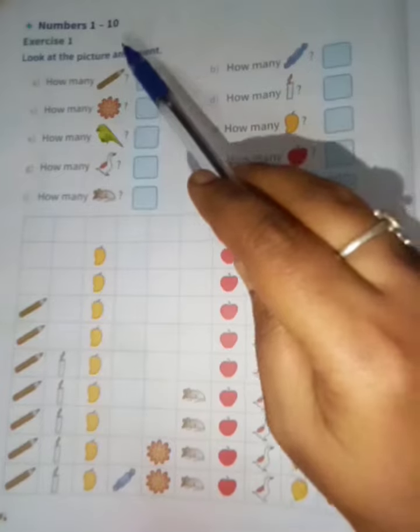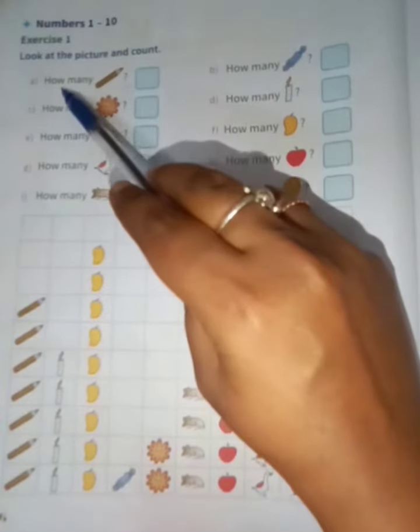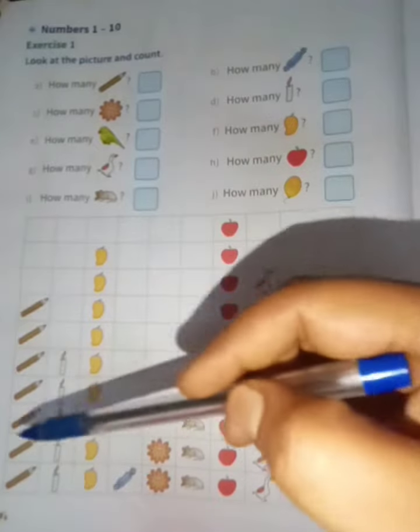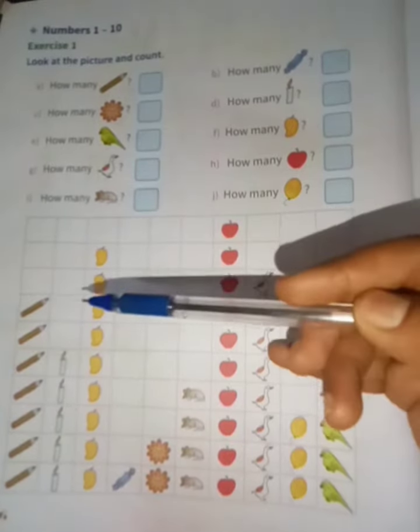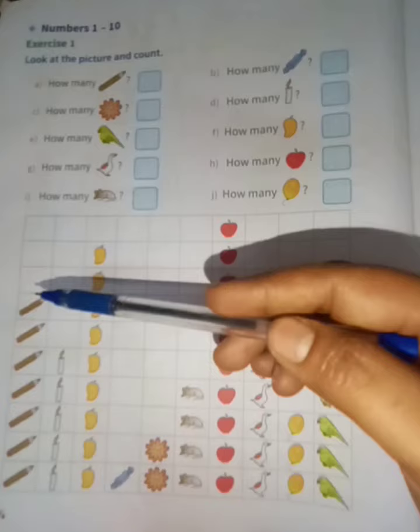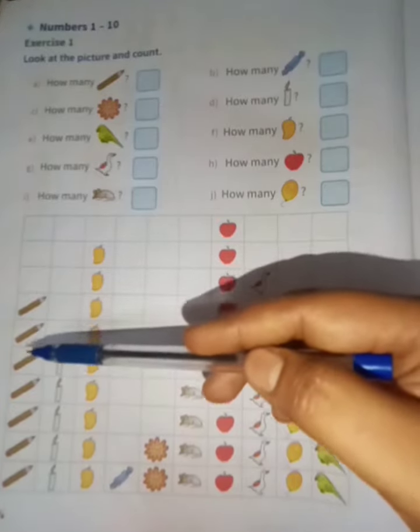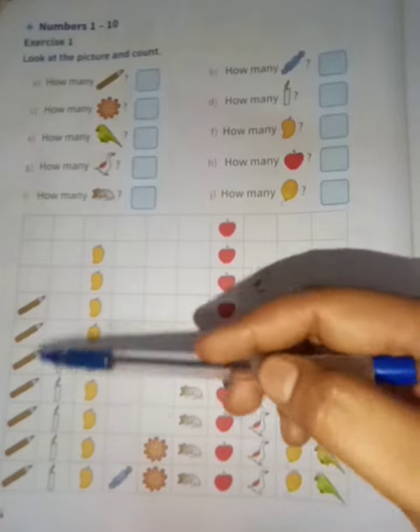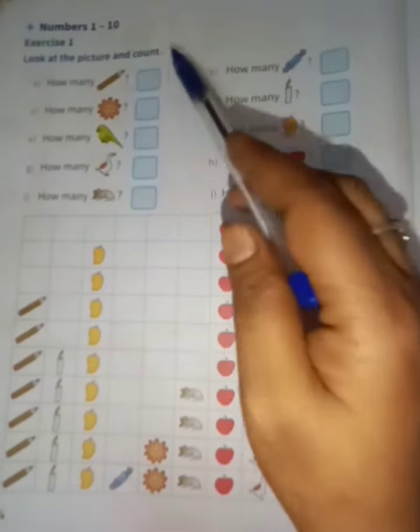How many pencils are there? So children, here in the picture you all have to count. For example, I will count here: 1, 2, 3, 4, 5, 6, 7. So there are 7 pencils, so here in the box I will be writing 7.